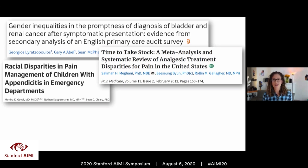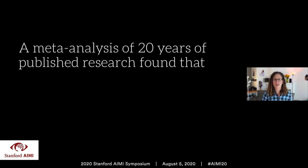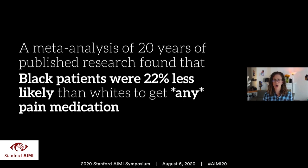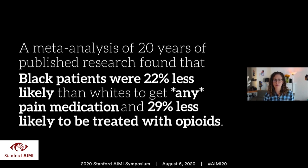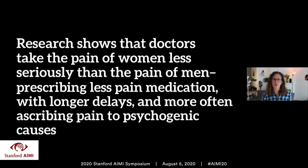There's a wealth of research on gender and racial disparities in medicine — on who receives pain medication, who receives prompt diagnoses. A meta-analysis of 20 years of published research found that Black patients were 22% less likely than whites to receive any pain medication, and 29% less likely to be treated with opioids. This difference even extended to children. Research also shows that doctors take the pain of women less seriously than the pain of men, prescribing less pain medication with longer delays, and more often ascribing pain to psychogenic causes.